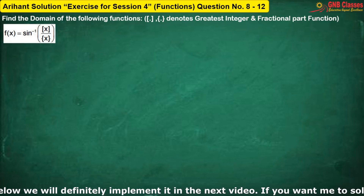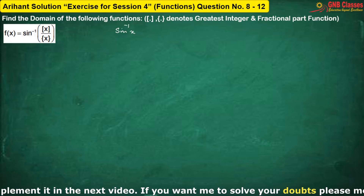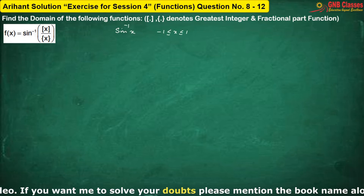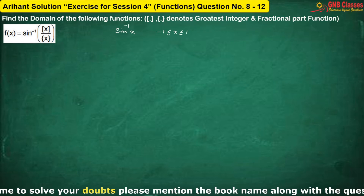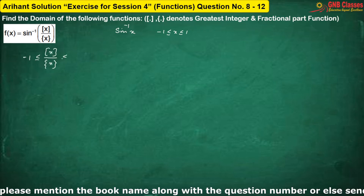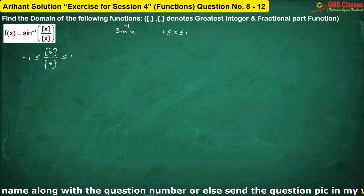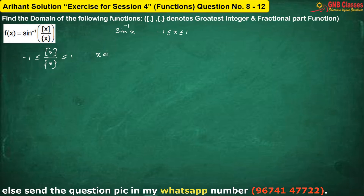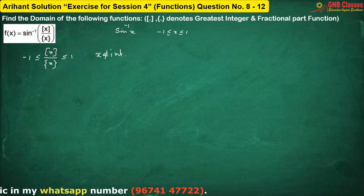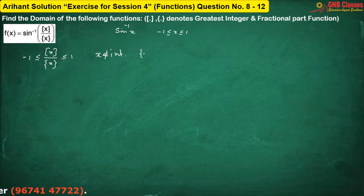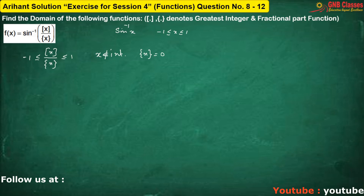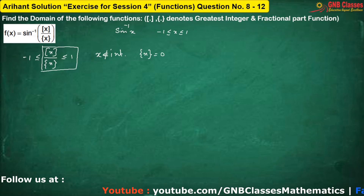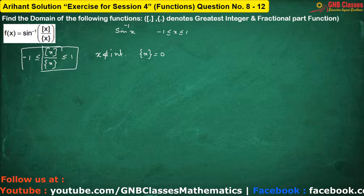To define the next function, for sine inverse x, x always lies between minus 1 and 1. Therefore, floor(x) divided by fractional part of x lies between minus 1 and 1. Note that x cannot be an integer, because if x is an integer the fractional part becomes 0 and the function is undefined. Let us solve the left inequality first, then the right part.